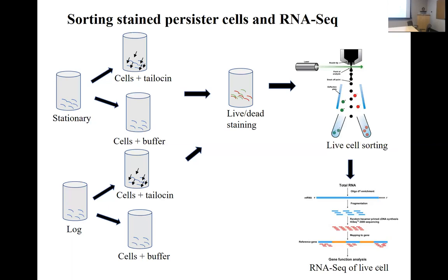Tailocin particles in lab conditions are expressed under stressful conditions of DNA damage — similar to bacteriophages — using a chemical called mitomycin C. We have several steps to purify these tailocin particles to an almost pure form. You can do a crude prep by filter sterilization, or use PEG precipitation which will pull out just the large particles.